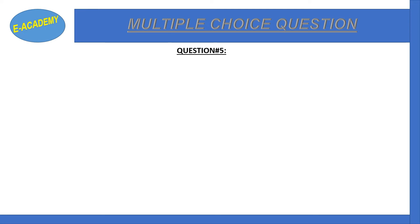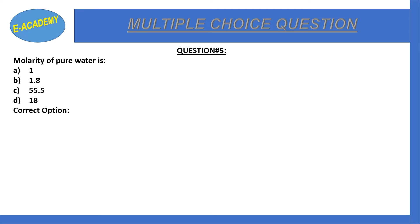Question number 5: Molarity of pure water is: a) 1, b) 1.8, c) 55.5, d) 18. Correct option is c) 55.5.